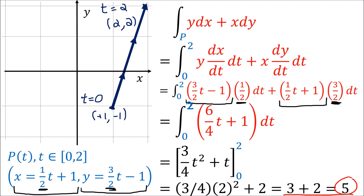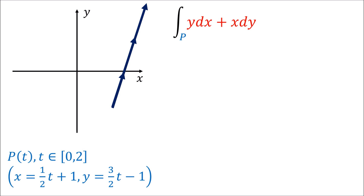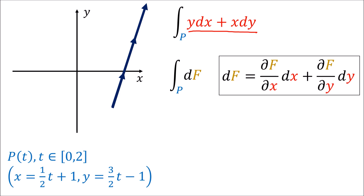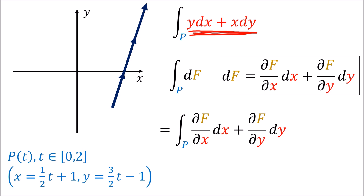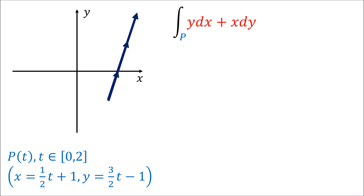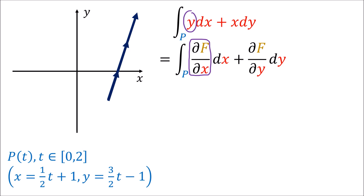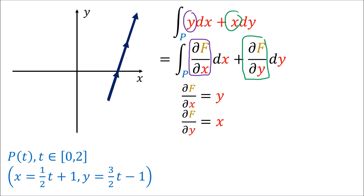Now let's do the integral using the differential form interpretation. Our goal is to turn this sum of covector fields into a single covector field df. We can expand df as (∂f/∂x)dx plus (∂f/∂y)dy. Matching terms, we need ∂f/∂x equals y and ∂f/∂y equals x. The function satisfying these equations is simply f equals x times y plus some constant — you can verify the derivatives work out.